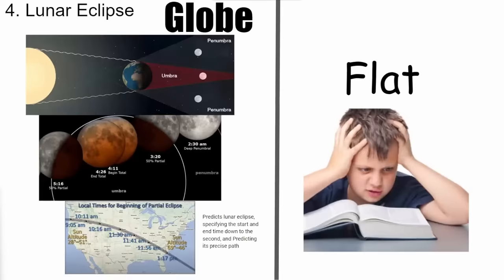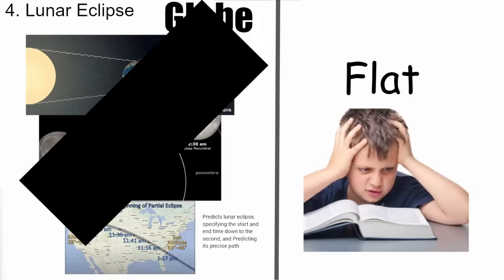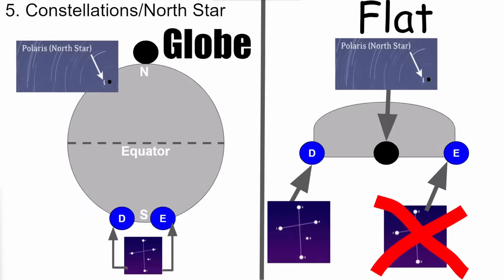Lunar eclipses: the only object that always projects a circular shadow is a sphere. The globe predicts circular lunar eclipses every single time regardless of Earth's orientation, and that we could predict exactly when and where each eclipse would be observable down to the second. Flat Earth has no explanation or predictive power for lunar eclipses. We do predict these eclipses down to the second in reality.